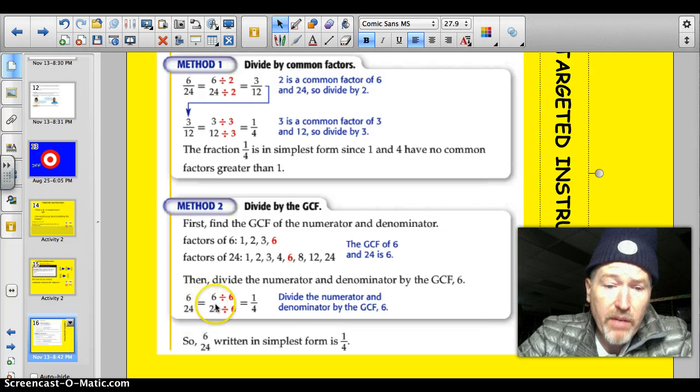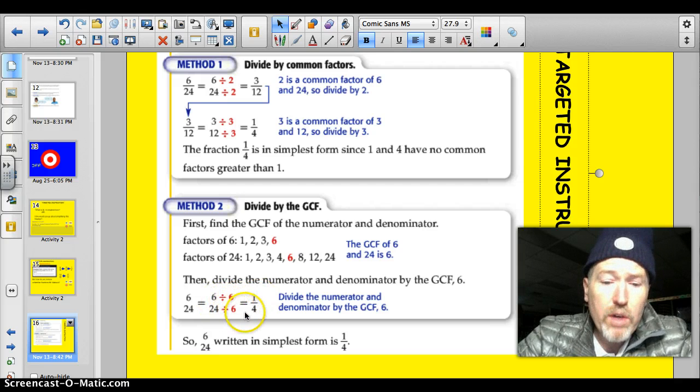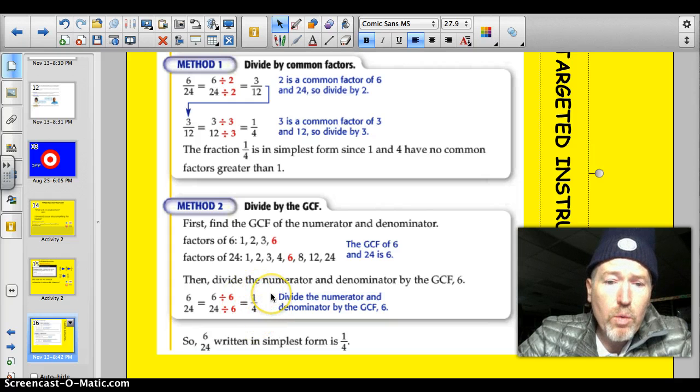Look, 6/24. They divided by the greatest common factor. So, 6 divided by 6 was 1. 24 divided by 6 was 4. So, they got to that 1/4 in one step.